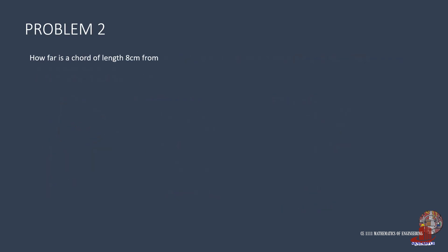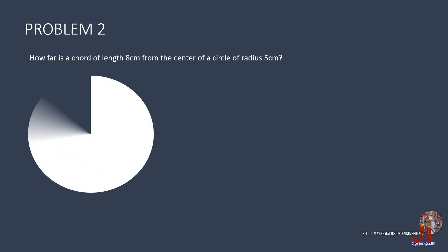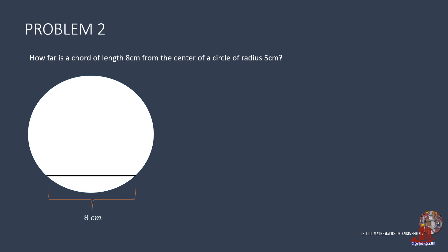Problem 2 requires the distance of the chord of length 8 cm from the center of a circle of radius 5. Drawing a chord and a perpendicular line from the center to the chord bisects it, creating a right triangle. The distance h is solved using the Pythagorean theorem: h equals the square root of 5 squared minus 4 squared, giving h as 3 centimeters.